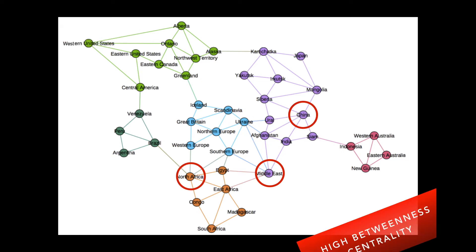Betweenness centrality identifies bridging nodes, which may be really good nodes for the medical team to inoculate because these nodes are sort of gateways to other places. This is particularly clear with North Africa — if you immunize North Africa, you've sectioned off South America, forcing infection to propagate through North America first, giving you more time to inoculate.